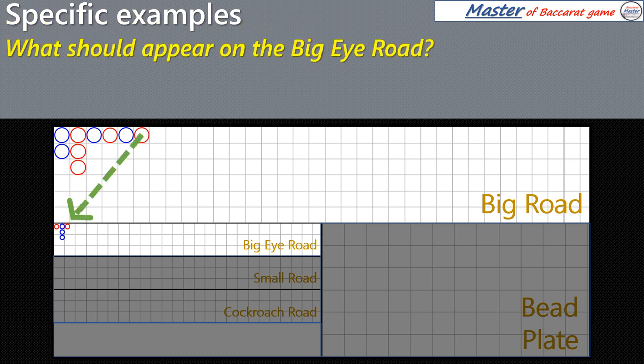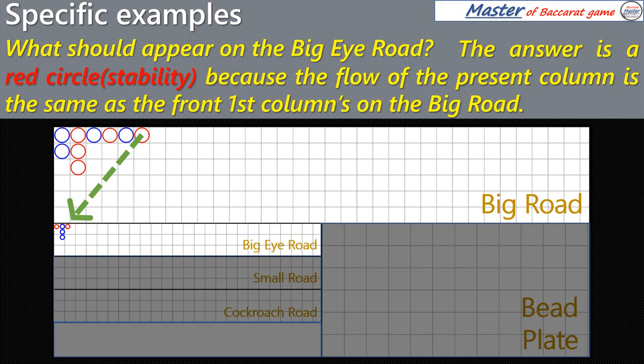What should appear on the Big Eye Road? The answer is a red circle, because the flow of the present column is the same as the front first column's on the Big Road.